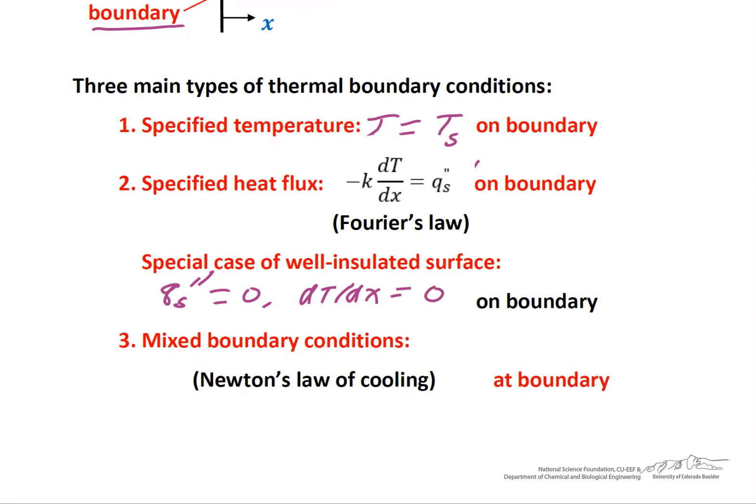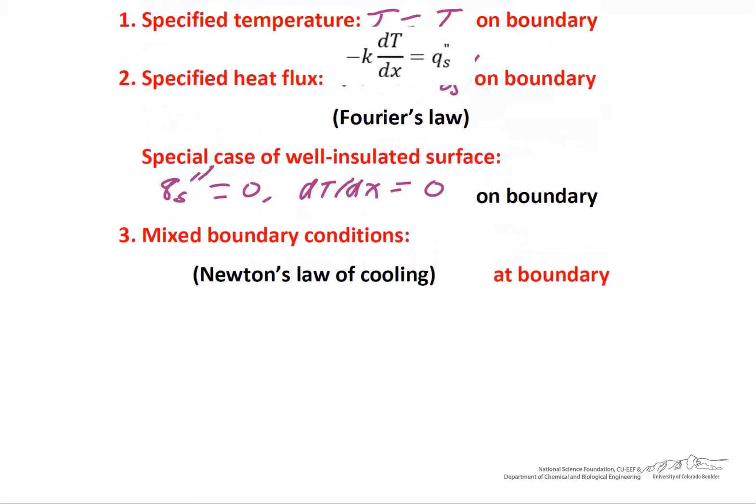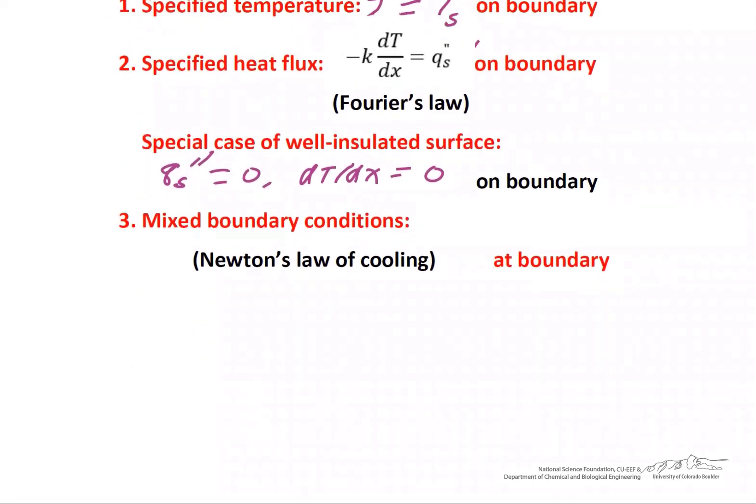The third type of boundary condition is called the mixed boundary condition, which involves both temperature derivatives and temperature. For example, if we had a solid adjacent to a liquid, we have Fourier's law on the left giving the heat flux through the solid, and that equals a heat transfer coefficient times the temperature of the wall minus the ambient temperature T-infinity through the fluid, which is Newton's law. That is a mixed boundary condition.